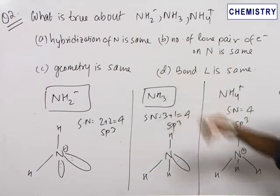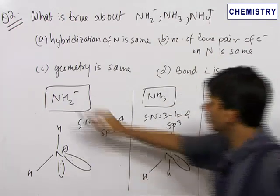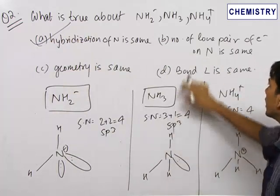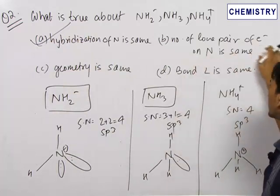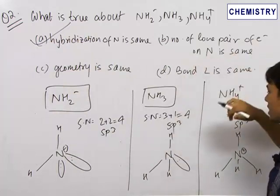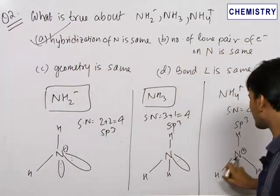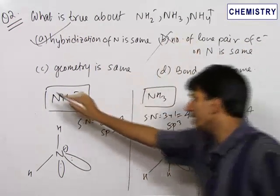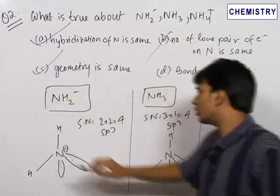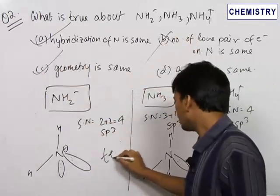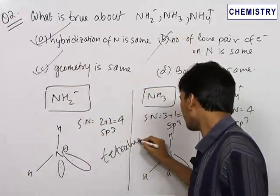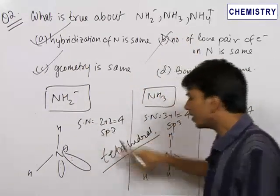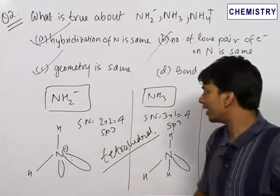Now we look at the options. Option one: hybridization of nitrogen is the same — this is correct. In all three species, the hybridization of nitrogen is SP3. Option two: number of lone pairs of electrons on nitrogen is the same — this is false. The number of lone pairs is 0 in NH₄⁺, 1 in NH₃, and 2 in NH₂⁻. Option three: the geometry is the same — this is correct, because the geometry in all three cases is tetrahedral.